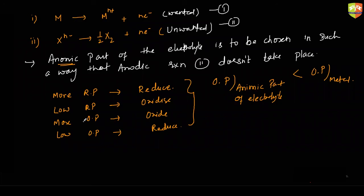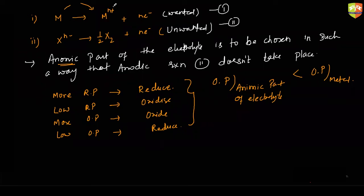At the anode, oxidation takes place. The anode is made up of impure metal, so from the impure metal anode, the metal ion M^(n+) comes into solution and gets deposited onto the cathode. The cathode is made up of pure metal. That's how we get the pure metal in this process.